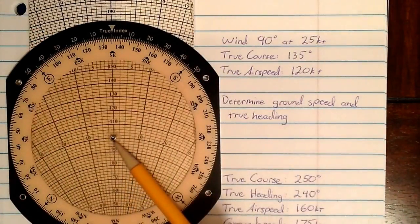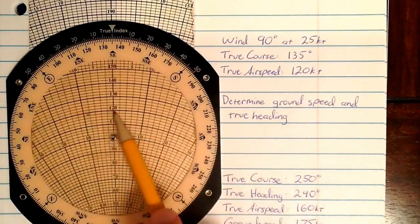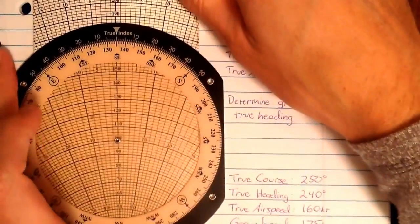Now we don't know our ground speed, so we can't use the grommet at this point, but we do know our airspeed. So let's set our airspeed at 120, and let's make sure that that wind dot is aligned directly over the airspeed arc.